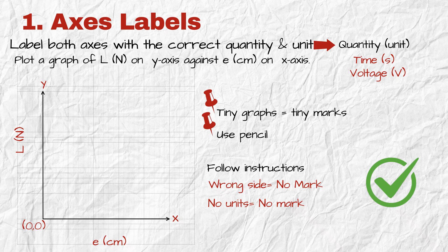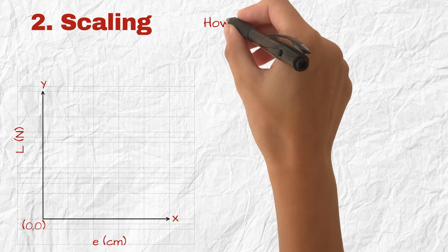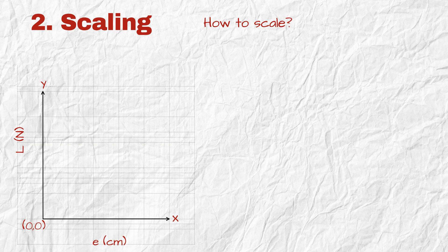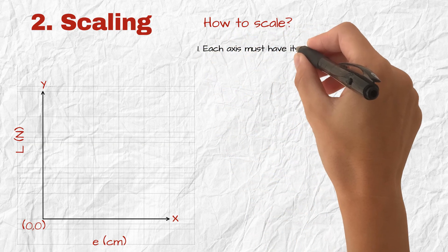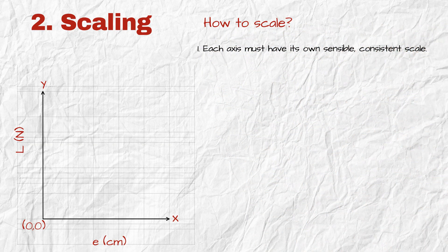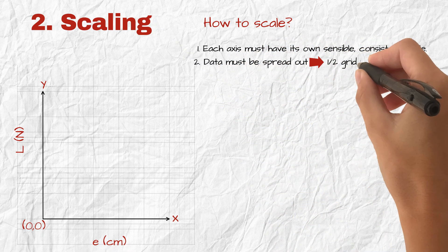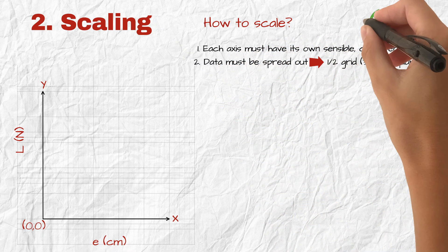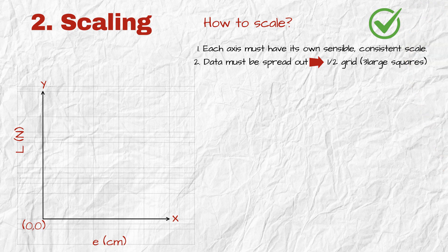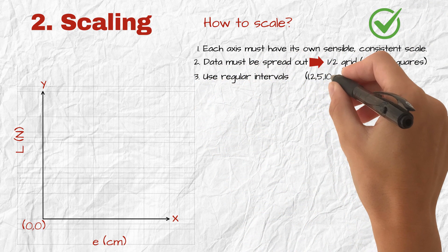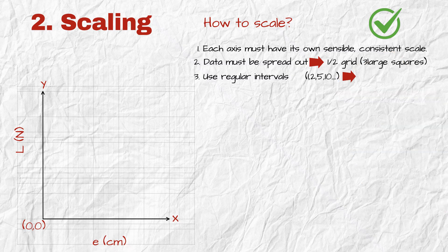Step two, scaling. Use a suitable scale to fit the data properly. How to scale? First, each axis must have its own sensible, consistent scale. Second, the data must be spread out, filling at least half the grid or three large squares. That's your second mark. Third, the scale must use regular intervals, like one, two, five, or ten. Not weird jumps.